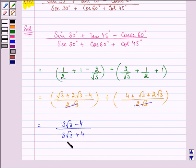We will be rationalizing the denominator by the conjugate of 3 root 3 plus 4, that is 3 root 3 minus 4.